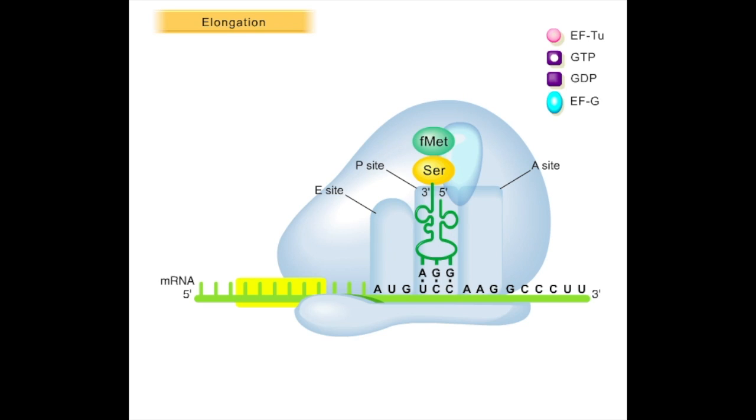An average polypeptide consists of about 300 amino acids. Let's watch the elongation process once again.